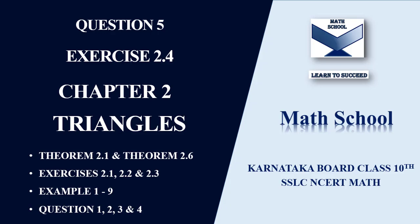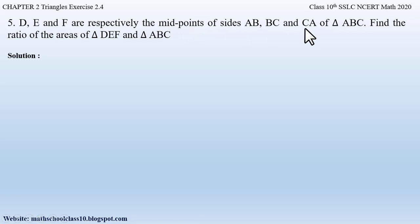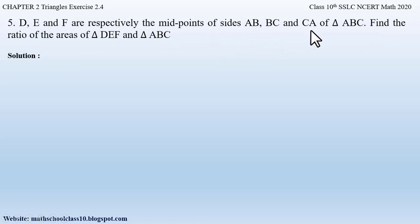Question number five from exercise 2.4, chapter 2 Triangles: D, E, and F are respectively the midpoints of sides AB, BC, and CA of triangle ABC. Find the ratio of the areas of triangle DEF and triangle ABC. No figure is given, so first let us draw the figure.